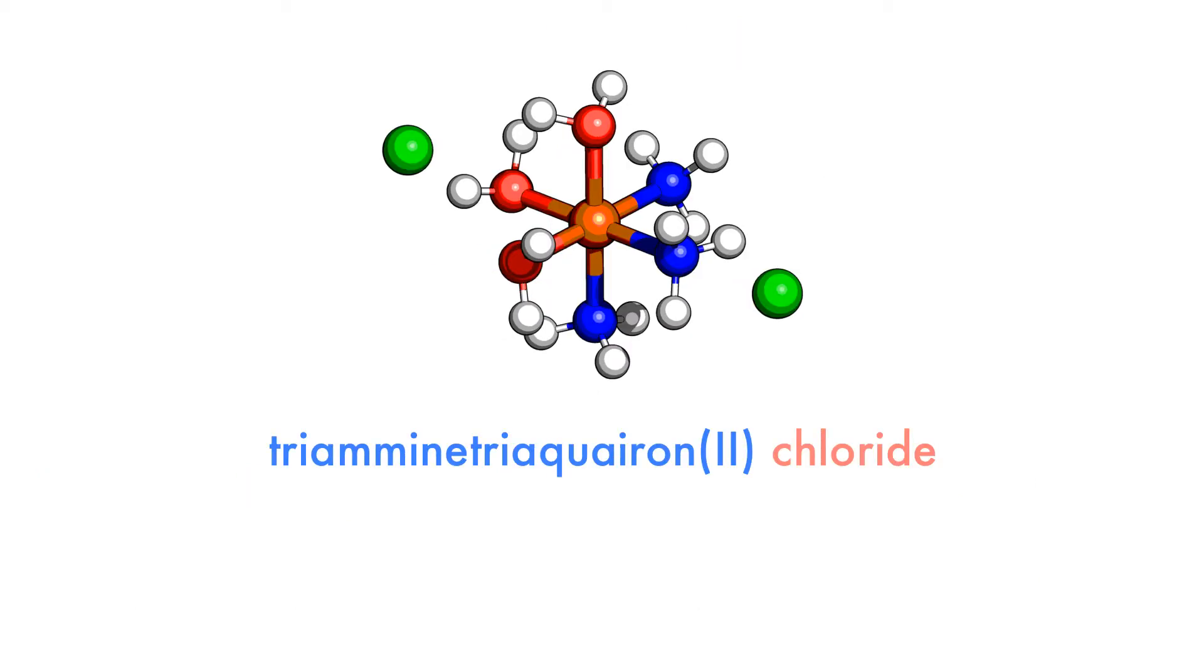Ligands are named in alphabetical order, ignoring any prefixes. The alphabetical order for the name is then also used to order ligands within the formula.